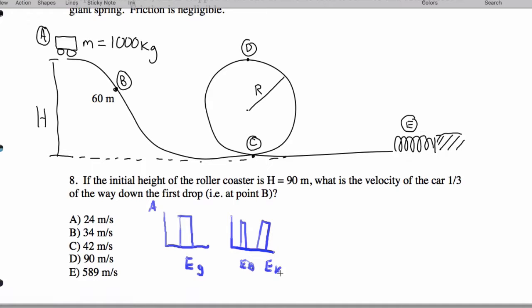So just to put this together, I'm going to have mgh at A equals mgh at B plus one-half mv squared. Putting in my numbers, that's going to be 1000 times 10 times 90 equals 1000 times 10 times 60 plus one-half times 1000 times v squared. So it actually turns out I can cancel the mass in all of these.